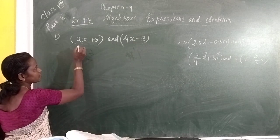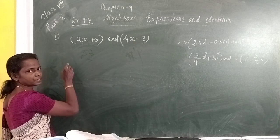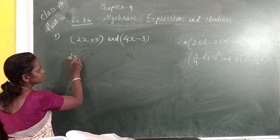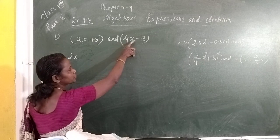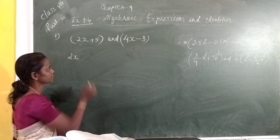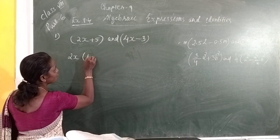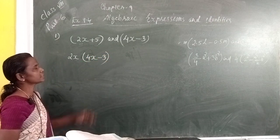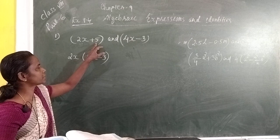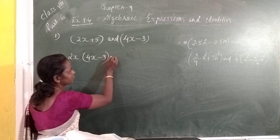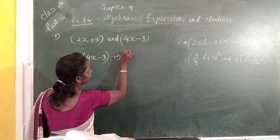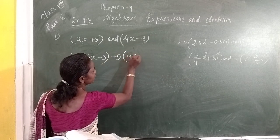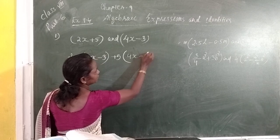First we take the first term of the first expression. So the first term is 2x — this 2x multiplies the two terms of the second expression, so we write 2x into 4x minus 3. Then the second term is positive 5, so plus 5 multiplied by the second expression, which has two times — 4x minus 3.